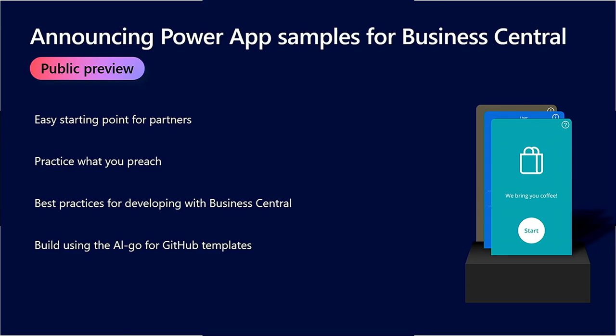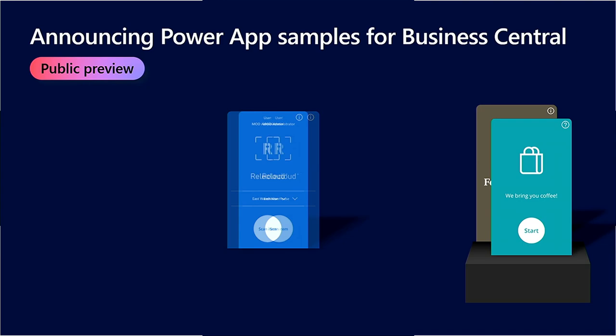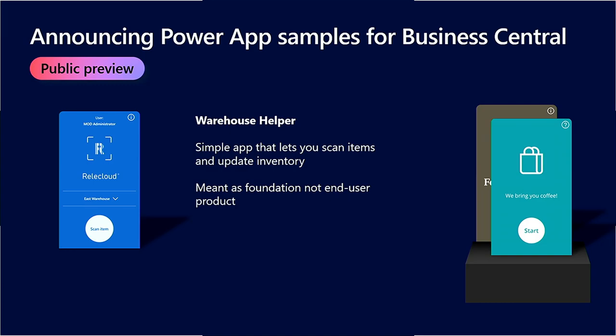The first app we're going to look at is the Warehouse Helper app. This is a simple app that lets you scan an item and update the item's inventory. We purposefully made this a very simple scenario because warehouse management is complicated and there are a lot of solutions out there already solving this. We wanted to build an easy foundation that you can use or build upon, solving the technical aspects of Power App development and providing visual UI patterns you can reuse.